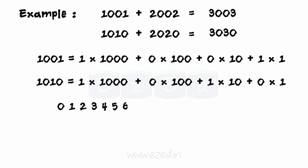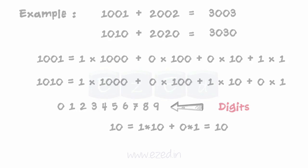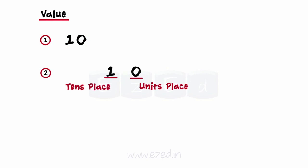In a positional number system, there are only a few symbols called digits, and these symbols represent different values depending on the position they occupy in the number. The value of each digit in such a number is determined by three considerations: 1. The digit itself. 2. The position of the digit in the number. 3. The base of the number system.